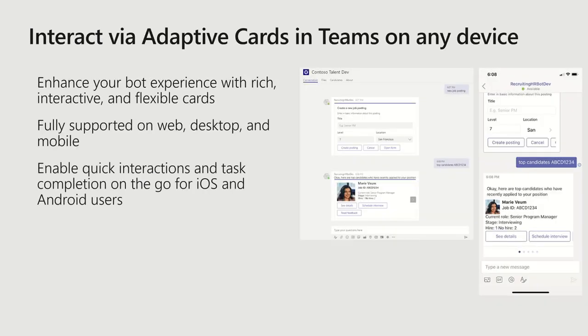When building your bot or messaging extension, you'll want to craft a richer experience through flexible layouts, and adaptive cards is how you achieve that. We fully support the adaptive card spec, and you can render your experience with an adaptive card on the Teams web, desktop, and mobile clients. This allows your bot to deliver experiences that enable quick interactions and task completion. It's very powerful especially on iOS and Android, where rather than having to go to a separate experience, users can use the bot to get those really bite-sized interactions done.